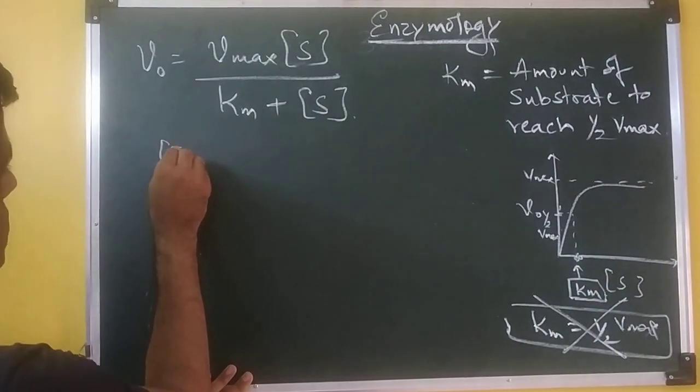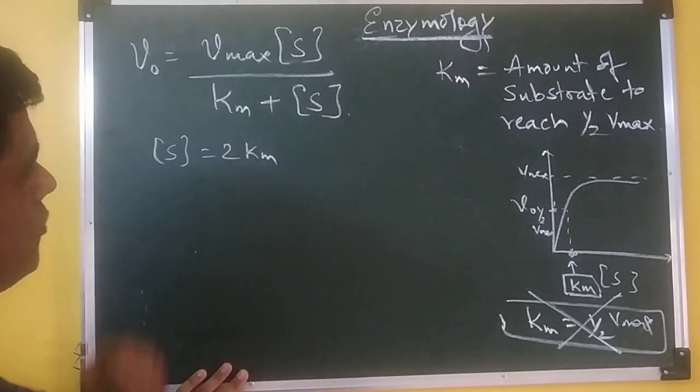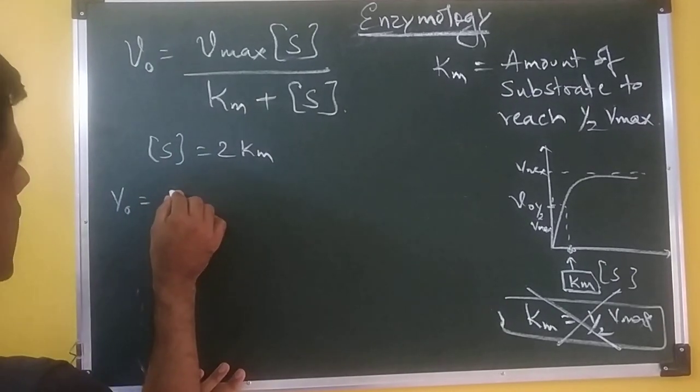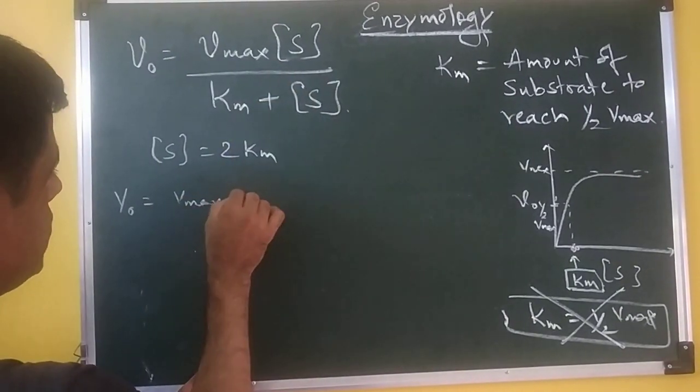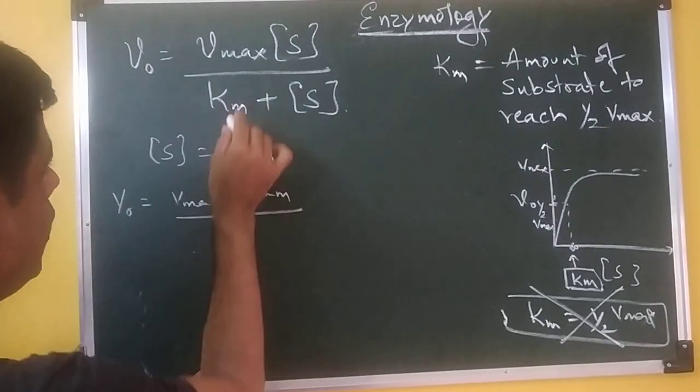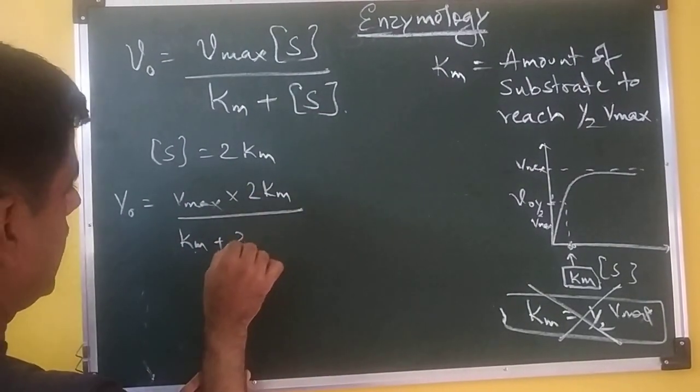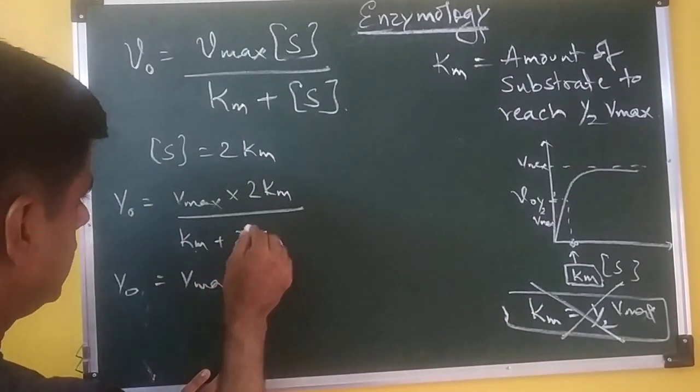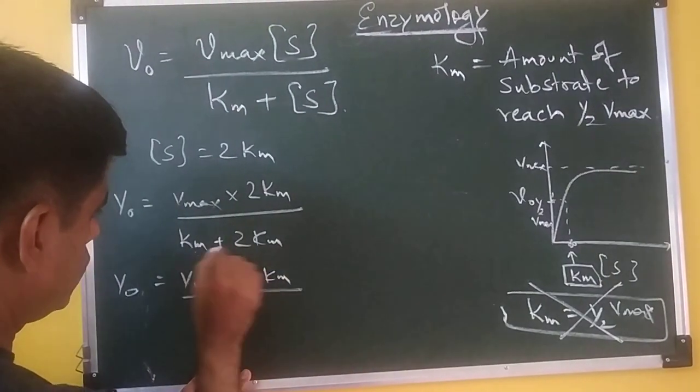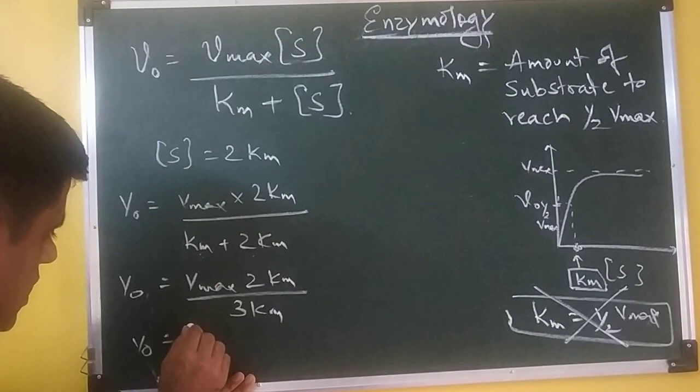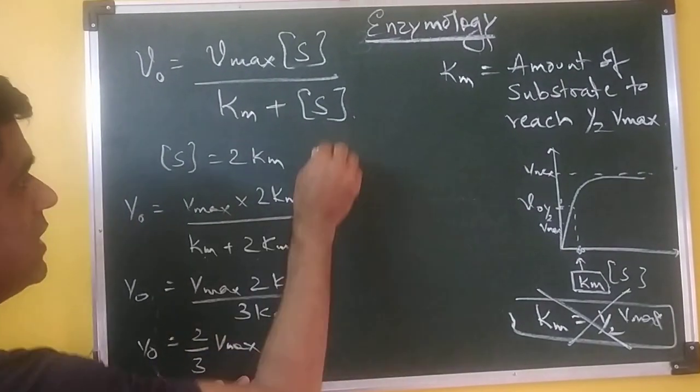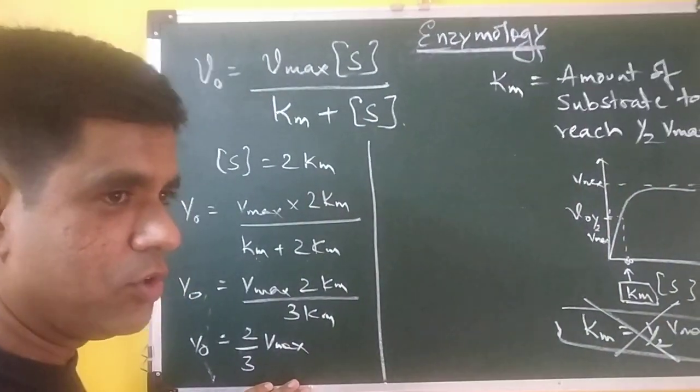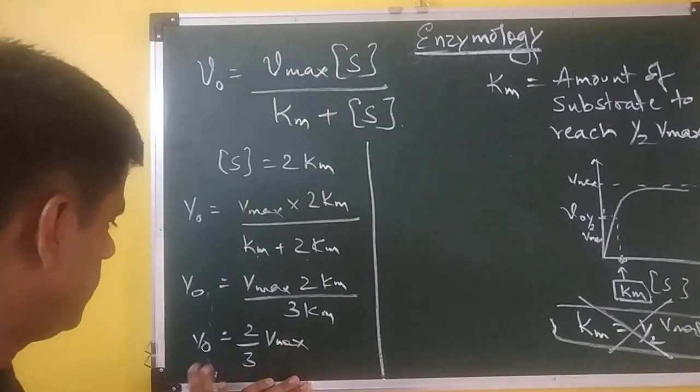That means, you have assumed that your value of substrate here is twice the value of your Km. So, let us put it here in this equation where you have V0 equals Vmax times S. Instead of S, you are going to have two times Km upon Km plus two times Km. So, here you will have V0 equals Vmax times 2 Km upon 3 Km. So, you have reached only two-thirds of your Vmax. Remember, even after doubling the amount of substrate which was equal to the value of Km, you have not reached the value of Vmax. You have reached only two-thirds.